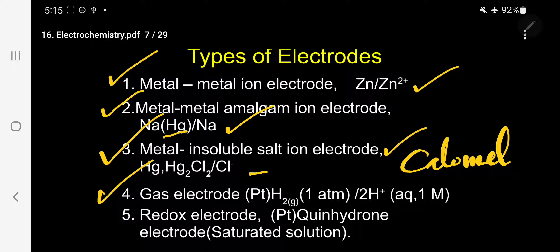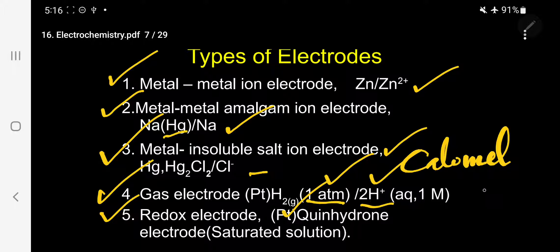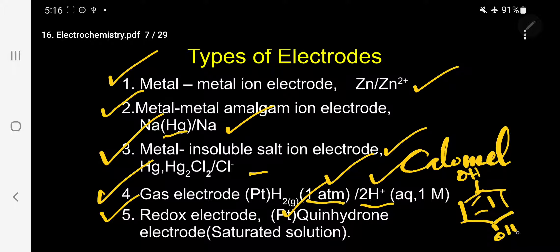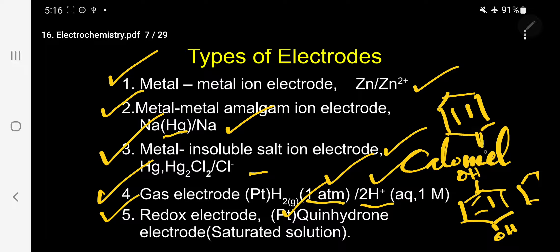Type four, gas electrode — that is the hydrogen electrode. Platinum rod dipped in hydrogen gas, maintaining one atmosphere. The HCl solution concentration is one molar. And finally, a redox electrode — specific example is quinhydrone. The platinum rod is dipped in quinhydrone saturated solution. Paraquinol undergoes oxidation to form paraquinone — this is called a redox electrode.